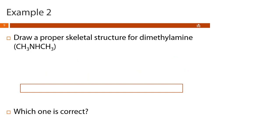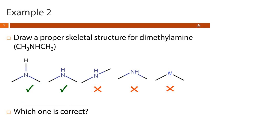Let's draw a proper skeletal structure for dimethylamine. There are actually two acceptable structures. Unlike acetone's trigonal planar geometry, dimethylamine is trigonal pyramidal, so bond angles are a little less than 120 degrees — but we still want to spread atoms as far apart as possible, and the first structure does that well. The second structure is also correct: the only difference is we didn't draw a line connecting the nitrogen to the hydrogen, which is acceptable — we can write the hydrogen next to the atom it's bonded to, saving space in complex structures.